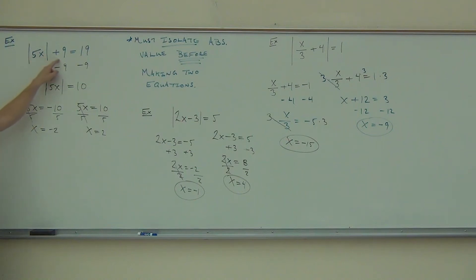Value of 10? Plus 9? We got it. Negative 2. 5 times negative 2? Absolute value of negative 10? 10. Plus 9, 19.